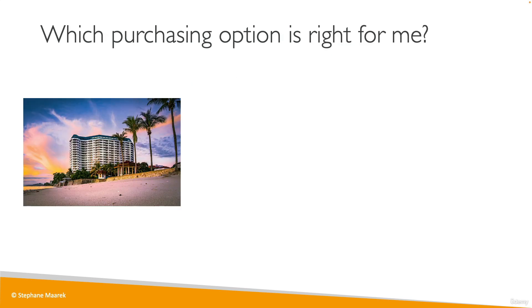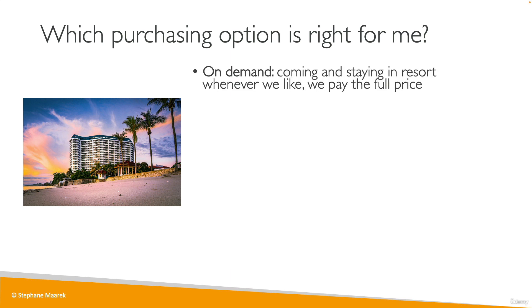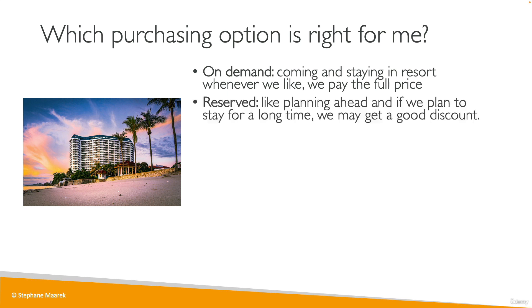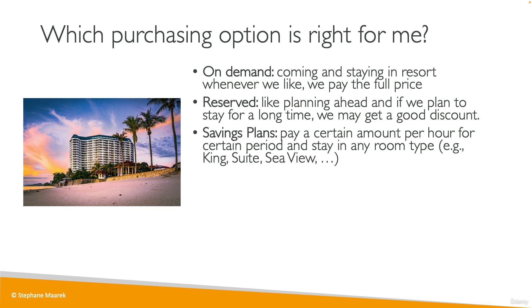It can be difficult to understand which purchasing option is right for you, especially if you're a beginner, so let me give you a resort analogy as a summary. With on-demand, you come to the resort whenever you like and pay the full price. For reserved, you plan ahead and know you're going to stay a long time — one to three years — and you get a good discount. Savings plan is saying you know you'll spend a specific amount at the resort — maybe $300 per month for the next 12 months — and you may want to change the room type over time (king, suite, seaview), but you're committing to a specific spending.